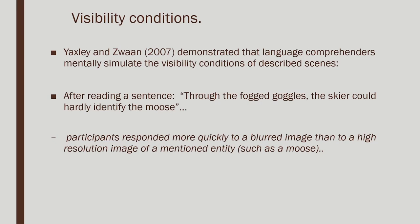Yet another domain of research within visual simulation is the condition of visibility — whether something is clearly visible or not. A very interesting study demonstrated that language comprehenders mentally simulate the visibility conditions of a described scene. It is not only the orientation or shape of the object, but also the visibility condition — meaning even a finer detail about the object is simulated. For example, they used sentences like 'through the fog goggles, the skier could hardly identify the moves.'